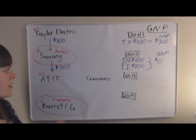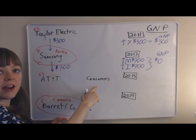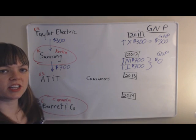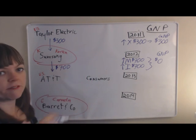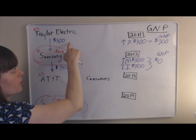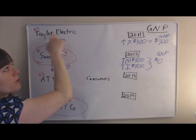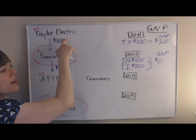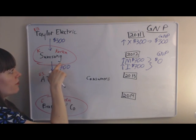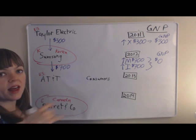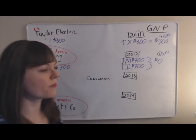We're happy with zero GNP in 2012 because none of the U.S. players were actually creating any value. We were happy to have $300 worth of value created in 2011 because someone owned by the U.S. created value. In 2012, nobody owned by the U.S. created any value, so we want GNP to be zero.